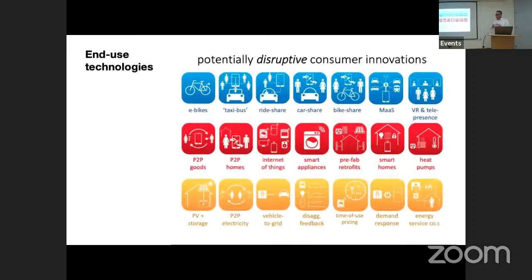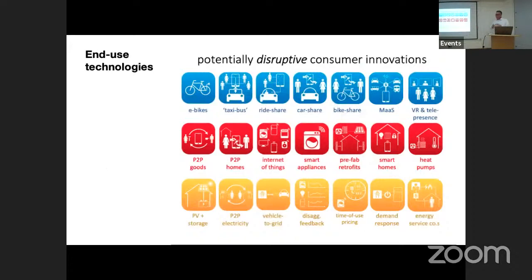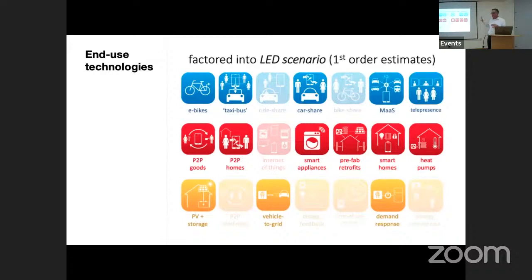Looking at these end-use technologies — potentially disruptive consumer innovations — in transport we see e-bikes, ride sharing, car sharing, mass transport. In buildings and appliances: retrofitting buildings, smart homes, heat pumps, internet of things, better control. At the bottom: lots of renewables to provide more electricity. In the scenario in our paper, we modeled all of these using realistic examples already happening in the world and modeled what it would look like if they translated to more people.